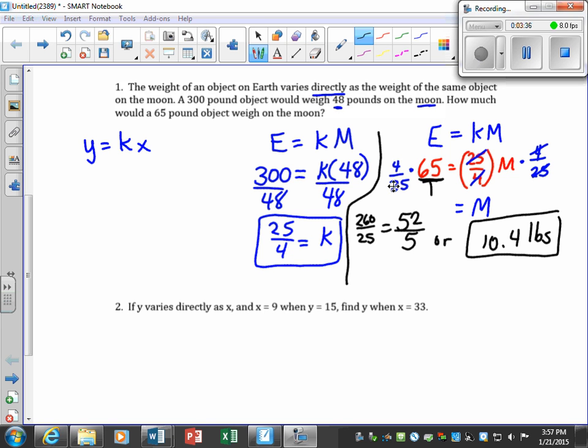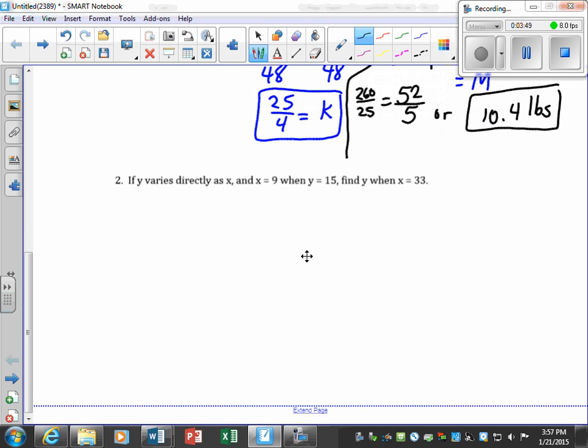From the last question, the 4 times 65 is 260 over 25. I know I jumped right to the reduced fraction of that, but if you needed that intermediate step in between, there it is. The next one we're going to look at is, if y varies directly as x. This tells me that I'm going to be working with the format y equals kx. And the next thing, we want to fill in this value and this value to determine what k is. So they tell me x is 9 and they tell me y is 15.